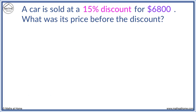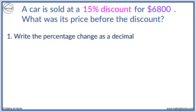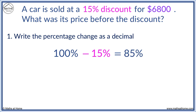For example, a car is sold at a 15% discount for $6,800. What was its price before the discount? We started with 100% and a 15% discount means we subtract 15%, which leaves 85%. As a decimal we divide 85 by 100 to get 0.85.